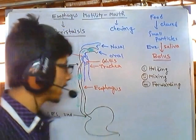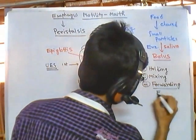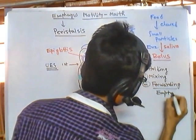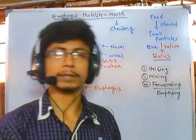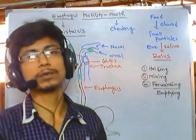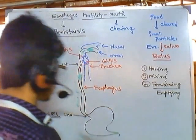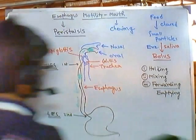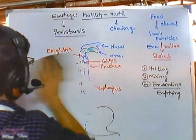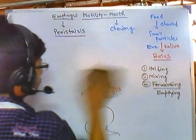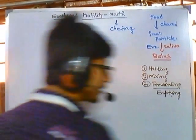Forwarding also means emptying. Emptying of the food can also be regulated by the amount of food — if you take more food, emptying will be made faster as well. Holding can be achieved simply by the structure of the stomach itself, so we do not need to worry about holding much. As food comes in, the stomach kind of expands.